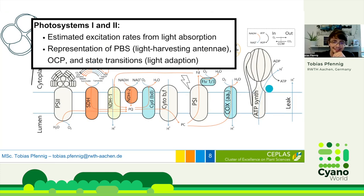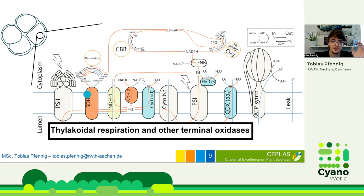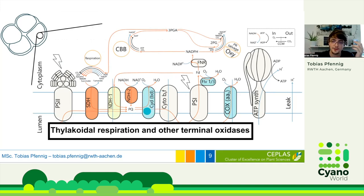We also include thylakoid respiration because, as you probably know, for cyanobacteria it's quite special that the respiration intercepts with the photosynthetic electron transport — it shares a membrane. So electrons inserted from glycolysis directly integrate into photosynthetic electron flow, which of course affects all of the other electron fluxes. To complete the picture, we also include terminal oxidases, which reduce oxygen back to water. Not all terminal oxidases are just active in respiration — some also act in normal photosynthetic electron flow.